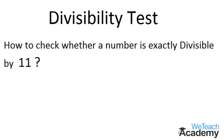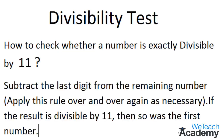To check whether a number is exactly divisible by 11, subtract the last digit from the remaining number. Apply this rule over and over again as necessary. If the result is divisible by 11, then so was the original number.